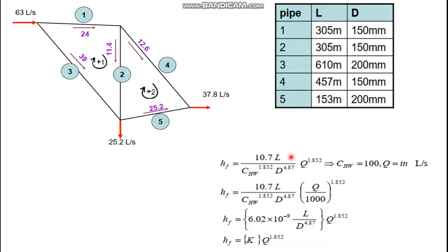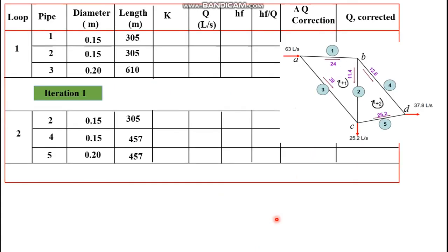So let's try to solve this problem. The first step is to calculate the head loss due to friction using the Williams-Hazen equation. We are given a Hazen-Williams constant of 100. We calculate the factor K by substituting the length and diameter for each pipe. K is given by the expression 6.02 × 10⁻⁹ multiplied by the length divided by the diameter raised to the corresponding power.